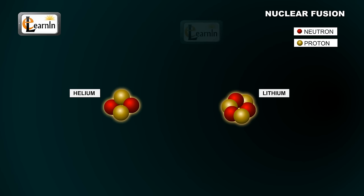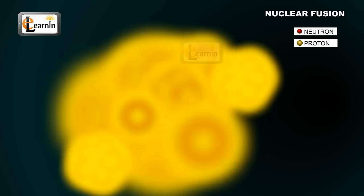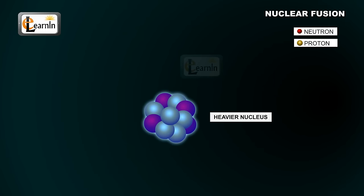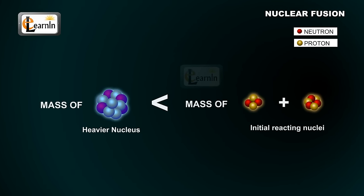For example, lighter nuclei such as lithium and helium, when combined together, form a heavier nucleus. The mass of the heavier nucleus is less than the initial reacting nuclei.